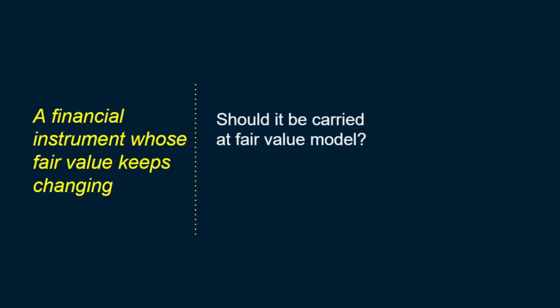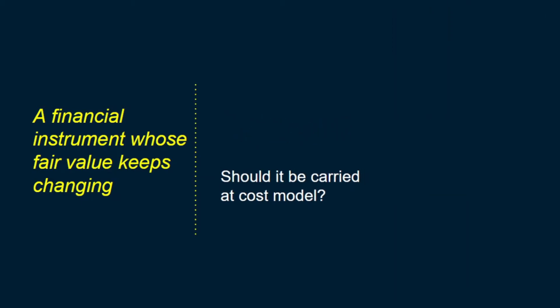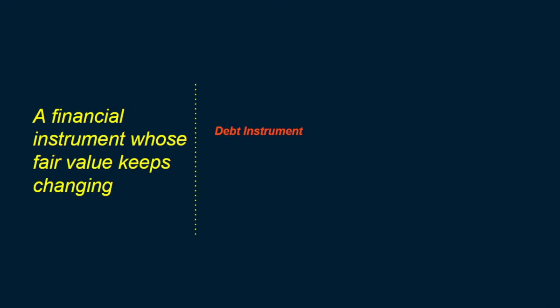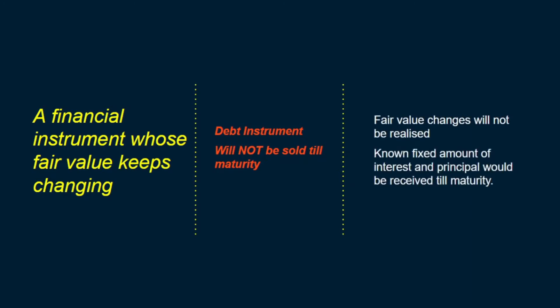If you remember our first video, we described a financial asset as a right to receive cash or other financial instruments — it's an asset because we expect to receive future economic benefits from it. Now, imagine a financial asset whose fair value is volatile in the market — it keeps changing. Without any further information about that asset, it's impossible to tell on any reasonable basis whether it should be recognized at fair value or at a cost model. But what if I tell you that financial asset is actually a debt instrument and the entity will not sell it till maturity? Now things have changed. We know that the fair value of that asset will never be realized, and because it's a debt instrument, we can imagine that we would be receiving known fixed amounts of payments until the asset's maturity.